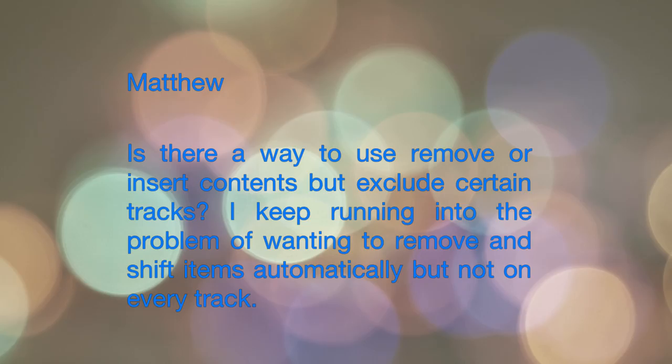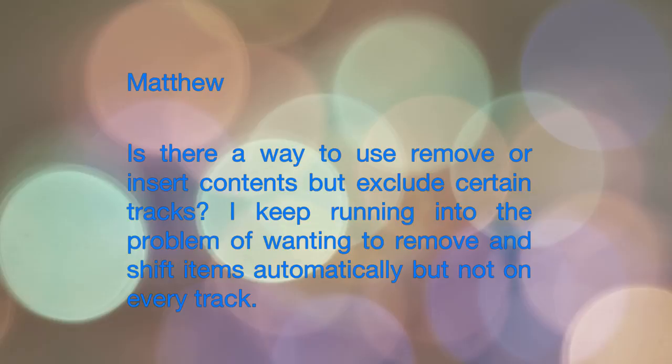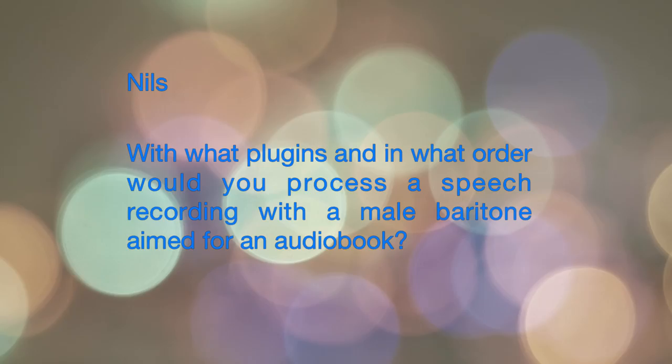A question from Matthew: is there a way to use the remove or insert contents actions but exclude certain tracks? He keeps running into the problem of wanting to remove or shift items automatically but not on every track. I tried this out and found the same issue. The only workaround I know is to use the single-track ripple mode. The easiest approach is to hide the tracks you don't want to shift, then edit on the visible tracks — when you bring the hidden tracks back, they won't be affected. In ripple all mode or using insert/remove actions, everything in the entire project gets shifted.